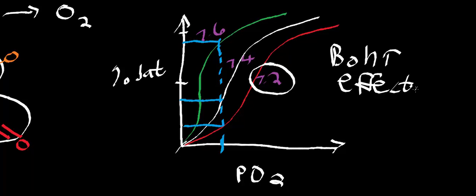The Bohr effect says that as the pH drops, the percent saturation of hemoglobin with oxygen also drops — a direct relationship. When protons bind to histidine residues within the protein, it favors movement from the R state to the T state. In the T state, oxygen dissociates.